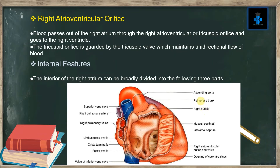Blood passes out of the right atrium through the right atrioventricular, or tricuspid, orifice and goes to the right ventricle. The tricuspid orifice is guarded by the tricuspid valve, which maintains the unidirectional flow of blood.